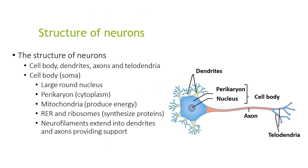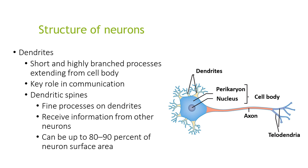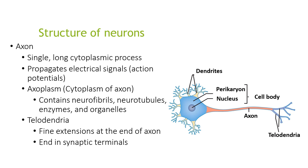The structure of the neuron involves the cell body, dendrites, axons, and telodendria. The cell body — also known as the soma — is large around the nucleus, has a perikaryon (cytoplasm), mitochondria that produce energy, rough endoplasmic reticulum and ribosomes that synthesise proteins, and neurofilaments which extend into dendrites and axons providing support. Dendrites are short, highly branched processes extending from the cell body with a key role in communication. Dendritic spines are fine processes of dendrites that receive information from other neurons and can be up to 80–90% of the neuron surface area. The axon is a single long cytoplasmic process that propagates electrical signals such as action potentials. The axoplasm contains neurofibrils, neurotubules, enzymes, and organelles. Telodendria are fine extensions at the end of the axon that end in synaptic terminals.